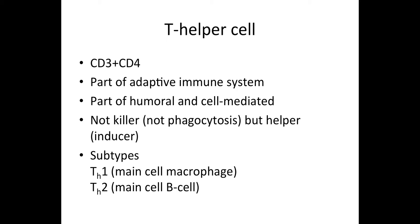T-helper cells also have another CD marker called CD3, which is common in all T-cells. CD stands for Cluster of Differentiation. The T-helper cells are part of our adaptive immune system, which is subdivided into a humoral and cell-mediated part, and the T-helper cell is part of both of them.